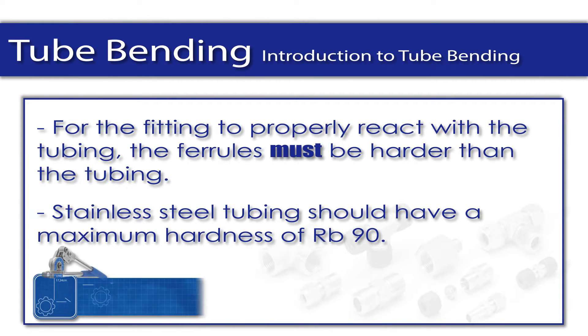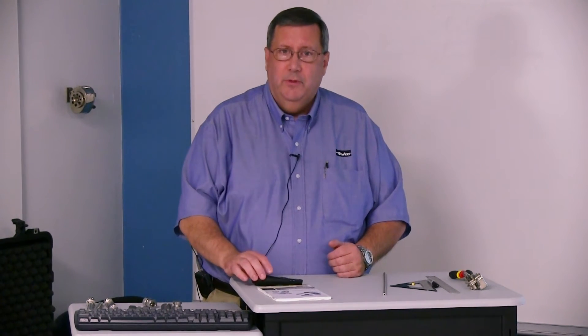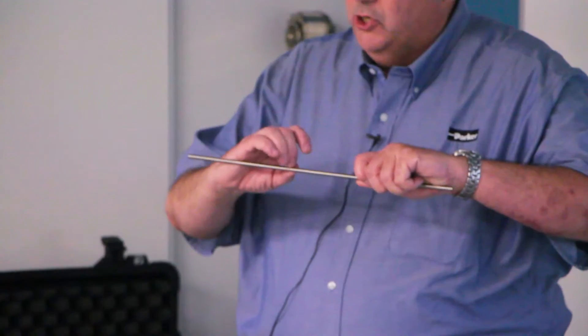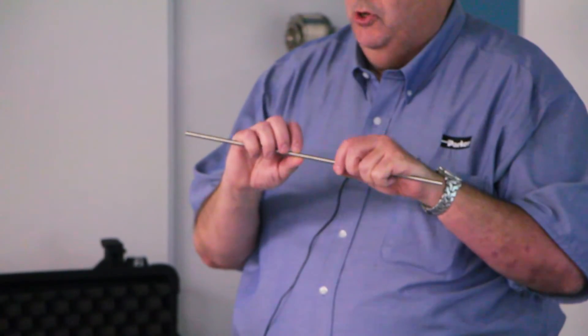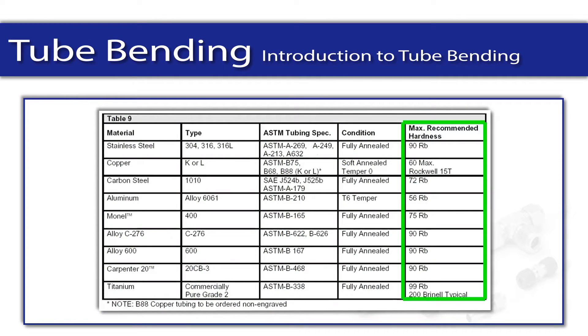The next thing we want to talk about is tubing hardness. For the fitting to work, the tubing must react with the ferrules. The ferrule must be harder than the tubing. We spoke about that already. You just can't use any tubing. We'll talk in the next couple slides about the type of tubing you use for instrumentation. There are special grades where the tubing is actually annealed, meaning there's a heat treatment process that makes it soft, so not only can the ferrule grip onto the tubing, but so you can actually easily bend the tubing.